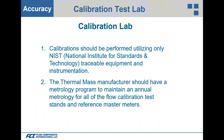Calibration test labs: calibrations should be performed utilizing only NIST — National Institute for Standards and Technology — traceable equipment and instrumentation. They should also maintain a metrology program, meaning annual service and verification on their primary meters. For example, FCI uses a turbine meter to calibrate thermal mass flow meters; every year that master meter is sent back to a NIST-approved agency for verification and recalibration.